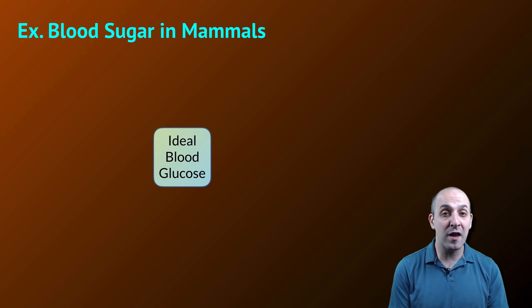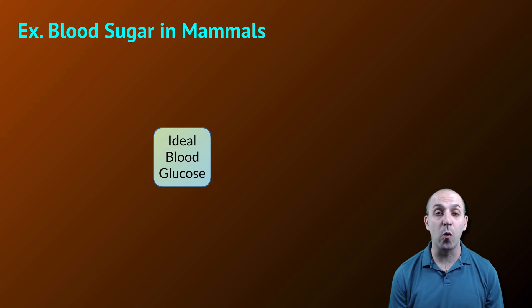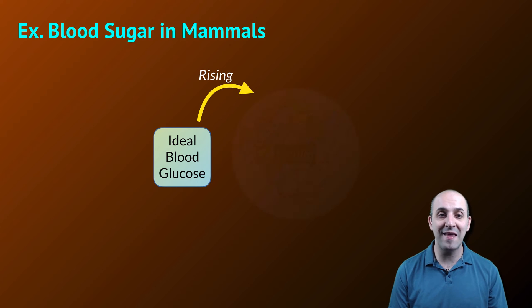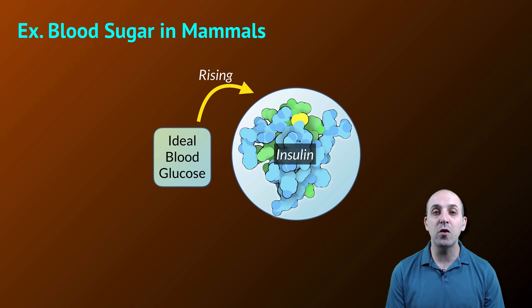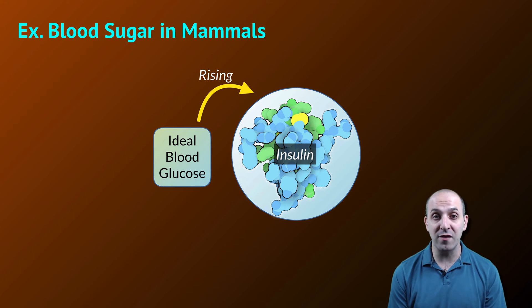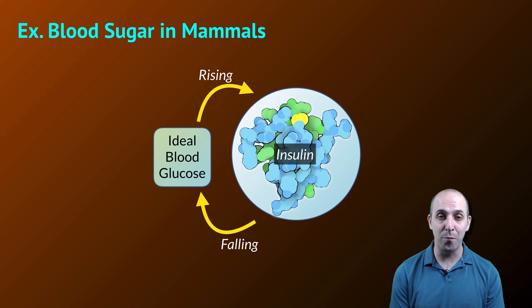In order to understand what this looks like, particularly with regard to blood sugar, let's look at how this works in mammals. Consider the ideal condition for blood glucose as a set point. As that goes up, our bodies will release insulin, which is a hormone that causes us to pull glucose out of the bloodstream and store it in carbohydrates like glycogen for later use. This, of course, causes our blood glucose level to fall back down to that ideal set point.